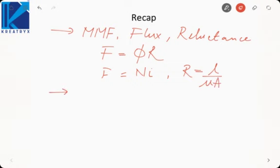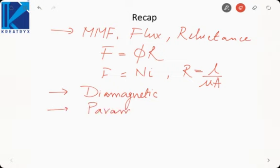We then moved on to magnetic materials — those which can be magnetized. First we saw diamagnetic materials, in which dipoles get oriented in the direction opposite to the magnetic field, but the intensity of magnetization is pretty less and the magnetization is non-persistent, lasting only while the magnetic field is applied. Then we saw paramagnetic materials, where dipoles get oriented in the same direction as the magnetic field, but magnetization is also non-persistent.